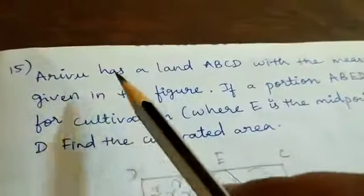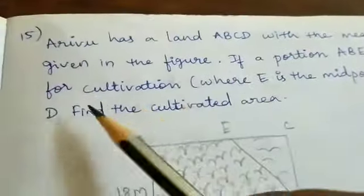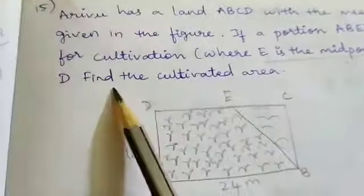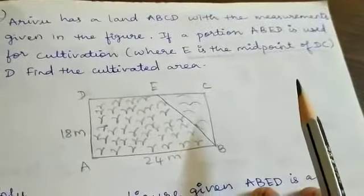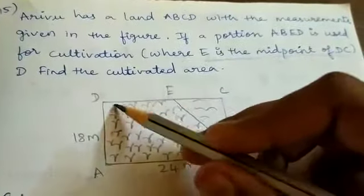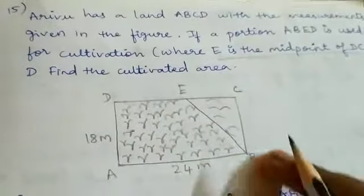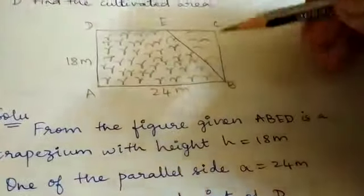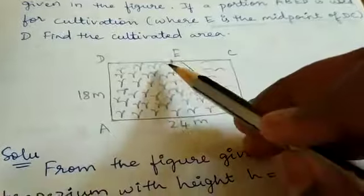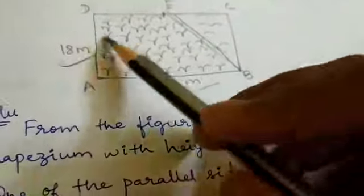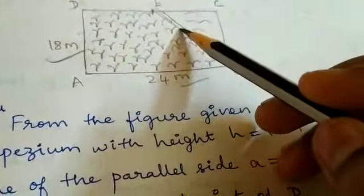Question 15: If a portion ABED is used for cultivation, where E is the midpoint of DC, find the cultivated area. In the portion we use for cultivation, the length is 50 and the width is given. This is a rectangular land. There is a part of that. DC, we choose the midpoint. Here is the diagram. So this is DC, here is the midpoint E.